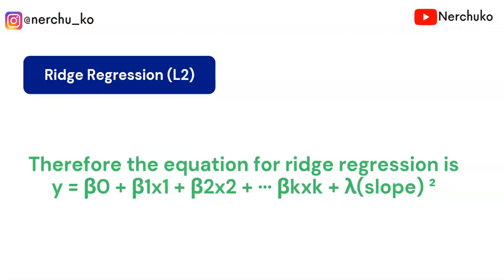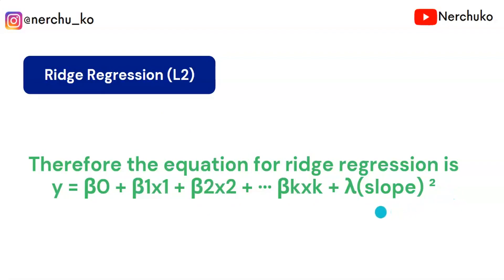Now let's look at the L2 regularization equation. The L2 regularization equation is our Ridge Regression equation. The difference between L1 and L2 is that in L2, the weight term is squared, whereas in L1 it is the absolute value of the weight (slope).